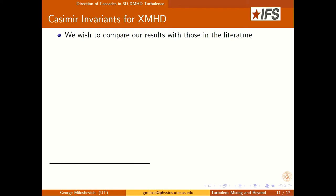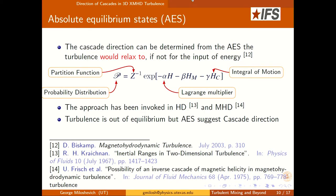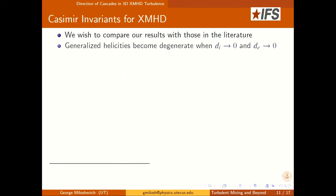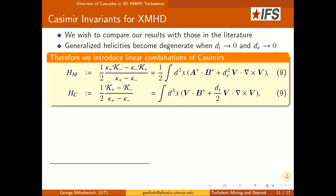We wish to compare results to those in the literature. The generalized helicities I mentioned both become magnetic helicity when you ignore the electron skin depth and the ion skin depth. So I found a linear combination more suitable for my purposes: one reduces to A·B when you ignore the electron skin depth, and the other term reduces to V·B when you ignore the ion skin depth — so one becomes like cross-helicity and the other magnetic helicity. This is more consistent with MHD.